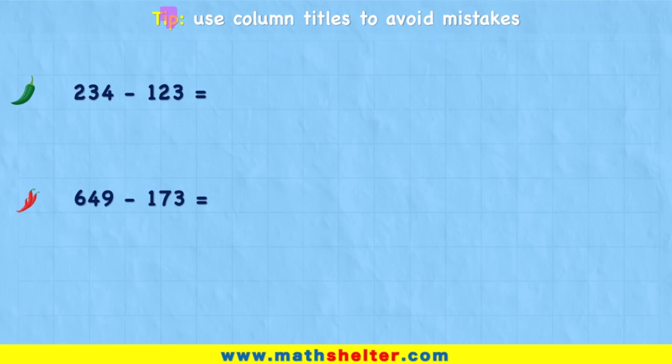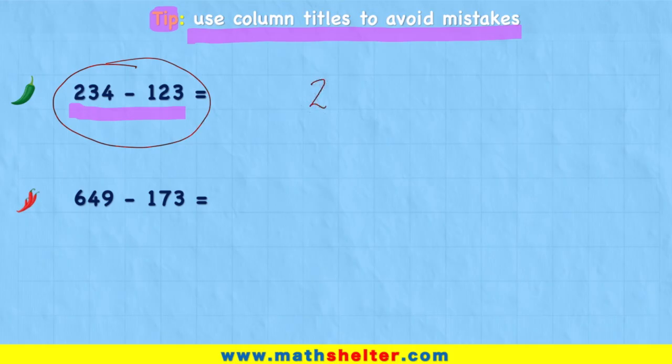Okay, our top tip for today is we are going to use column titles to help us avoid making any mistakes. So before we look at column subtraction, I want to show you what you might use before column subtraction to work out a question like this. So 234 can be broken up, and this process is called partitioning or expanding the number, and we are subtracting 123.